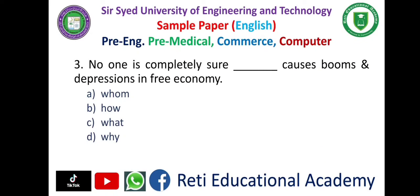Question number three: 'No one is completely sure dash causes booms and depressions in a free economy.' Options: A) home, B) how, C) what, D) why. The correct answer is C, 'what.' No one is completely sure what causes booms and depressions in a free economy.